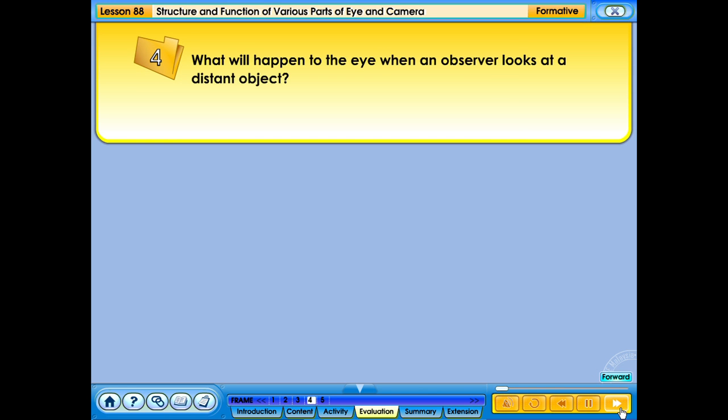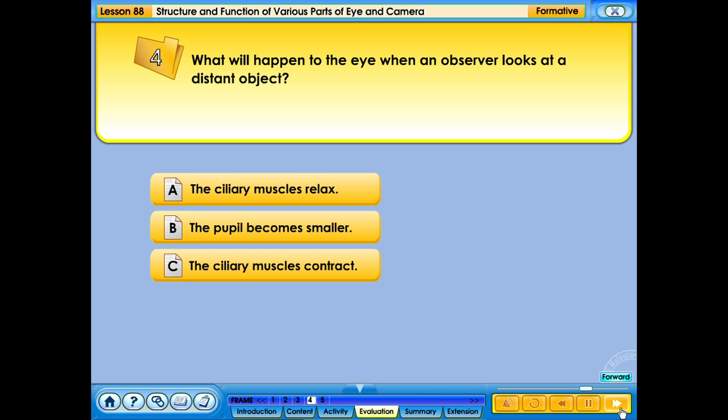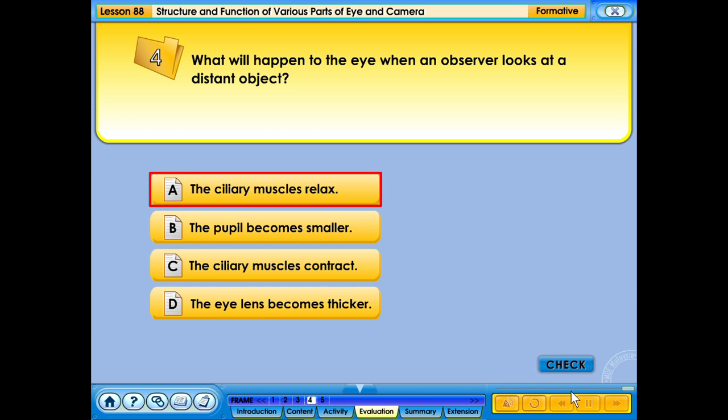What will happen to the eye when an observer looks at a distant object? A. The ciliary muscles relax. B. The pupil becomes smaller. C. The ciliary muscles contract. D. The eye lens becomes thicker. Your answer is correct.